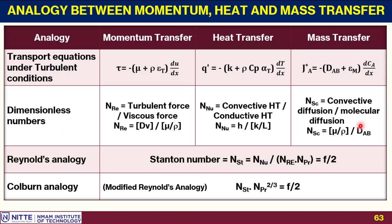Osborn Reynolds came up with the Reynolds analogy and defined a number called the Stanton number. The Stanton number relates three things: Nusselt number, Reynolds number, and Prandtl number (Cp·μ/k). The Nusselt number divided by the product of Reynolds number and Prandtl number equals f/2, where f/2 is the Fanning friction factor from momentum transfer. So the Fanning friction factor is related to the Stanton number.